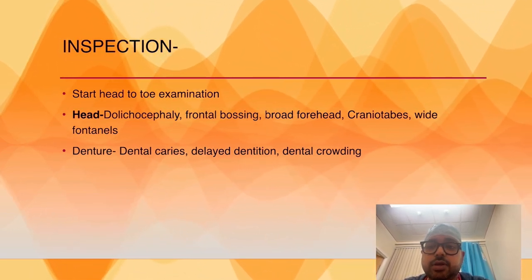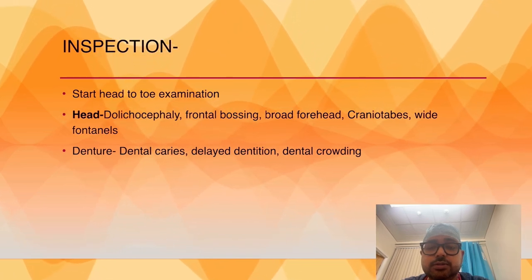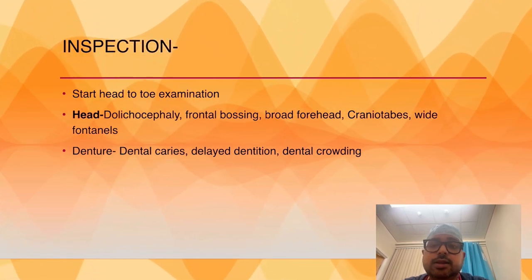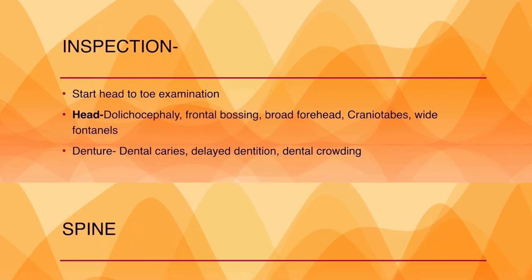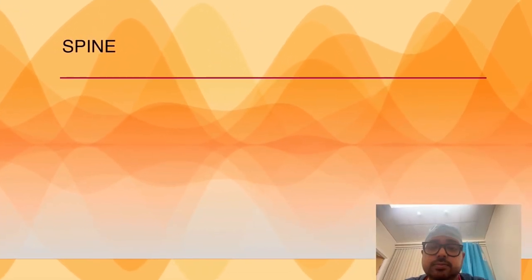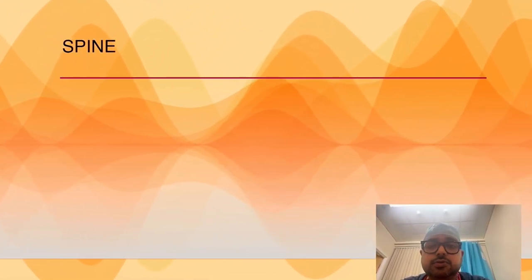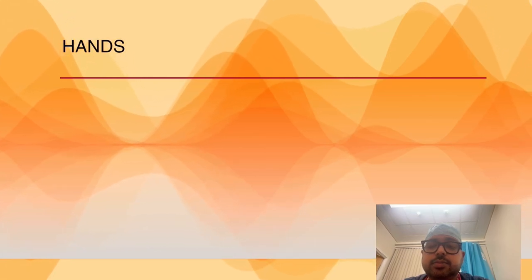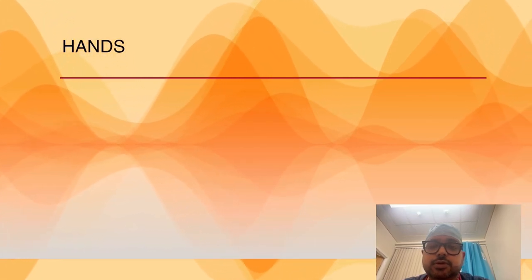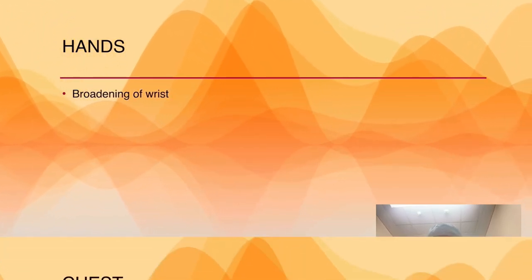In the head, you may expect dolichocephaly, frontal bossing, wide forehead, craniotabes, wide open fontanelles, dental caries, delayed dentition, and dental crowding. In the spine, there could be scoliosis. In the hand, there could be broadening of the wrist.